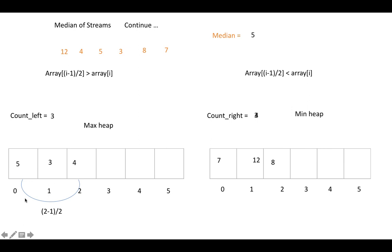At this final moment, the user asks for the median. Since count_left and count_right are both 3, the result is (5 + 7) / 2. That's how we find the median of a stream using two heaps. The time complexity is O(n log n): n for processing all elements, and log n for each percolate-up or percolate-down heap operation.